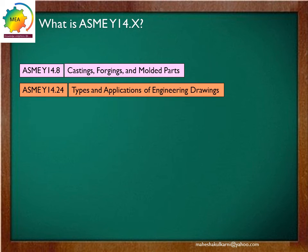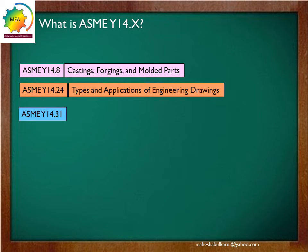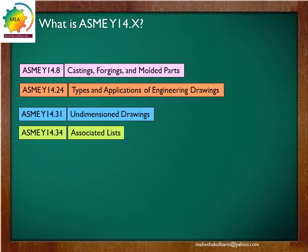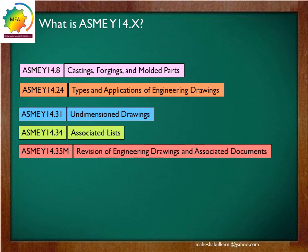Subcommittee 24 deals with types and applications of engineering drawings. ASME Y14.31 — subcommittee 31 deals with undimensioned drawings. ASME Y14.34 — subcommittee 34 deals with standards for associated lists. ASME Y14.35 — subcommittee 35 deals with revisions of engineering drawings and associated documentation.